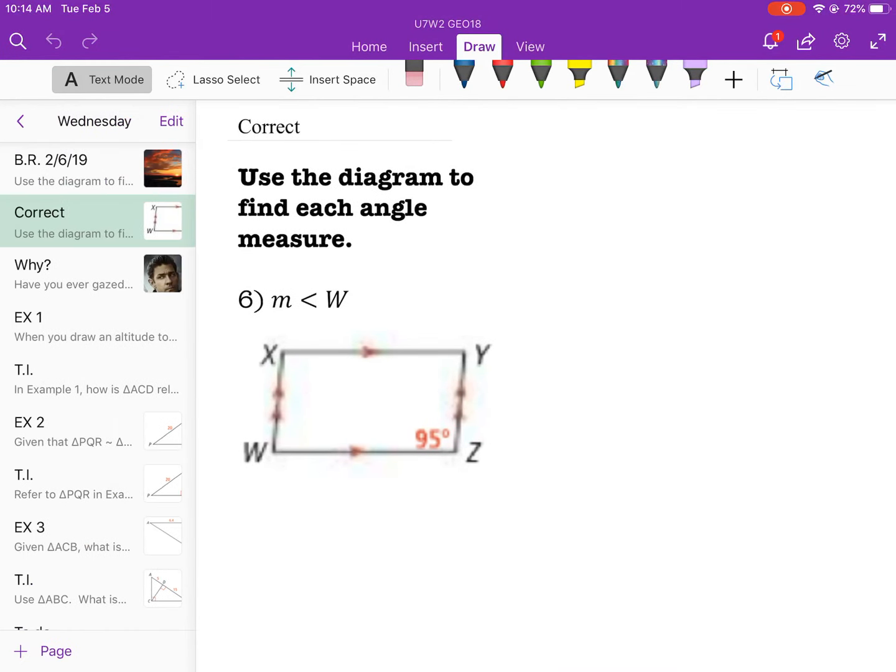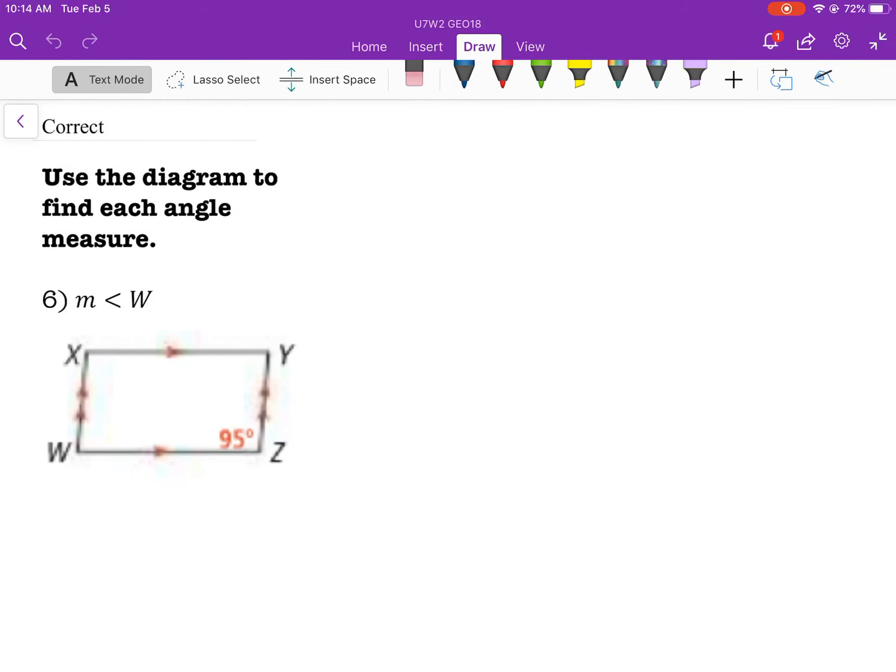Morning kids, this is for Wednesday. Hopefully my son is here by now. 7.4, this is the bell ringer. Measure W would be 180 minus 95, which is 85 degrees.